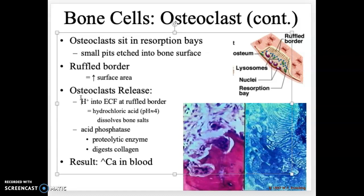Osteoclasts dissolve bone by releasing hydrogen ions into the extracellular fluid in the resorption bay, creating a more acidic environment — essentially hydrochloric acid — which dissolves the bone. Osteoclasts also secrete an enzyme called acid phosphatase, which requires an acidic environment to work. The '-ase' suffix indicates it is a proteolytic enzyme; acid phosphatase acts to digest collagen.